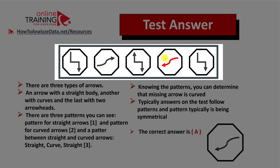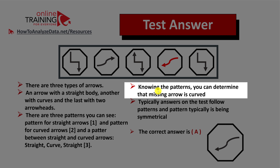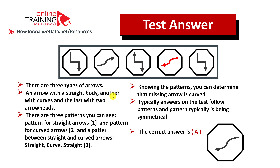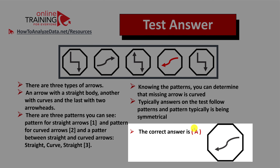You also see a pattern of straight arrows pointing down in the first and fifth shapes. Knowing the patterns, you can determine that the missing arrow is curved. There are at least two curved arrow choices, and typically the pattern on the test is symmetricity. The arrow in Choice C is not symmetrical to the arrow in shape 2. This is why the correct answer is Choice A.